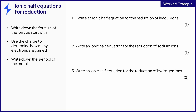Let's look at how to write half equations for reduction reactions. Remember, reduction is the gain of electrons. Example 1 asks us to write an ionic half equation for the reduction of lead(II) ions. The 2 in Roman numerals indicates that the lead ions have a 2+ charge. Each lead ion will therefore gain 2 electrons to form the element lead, the formula of which is simply its chemical symbol. This equation will score 1 mark.